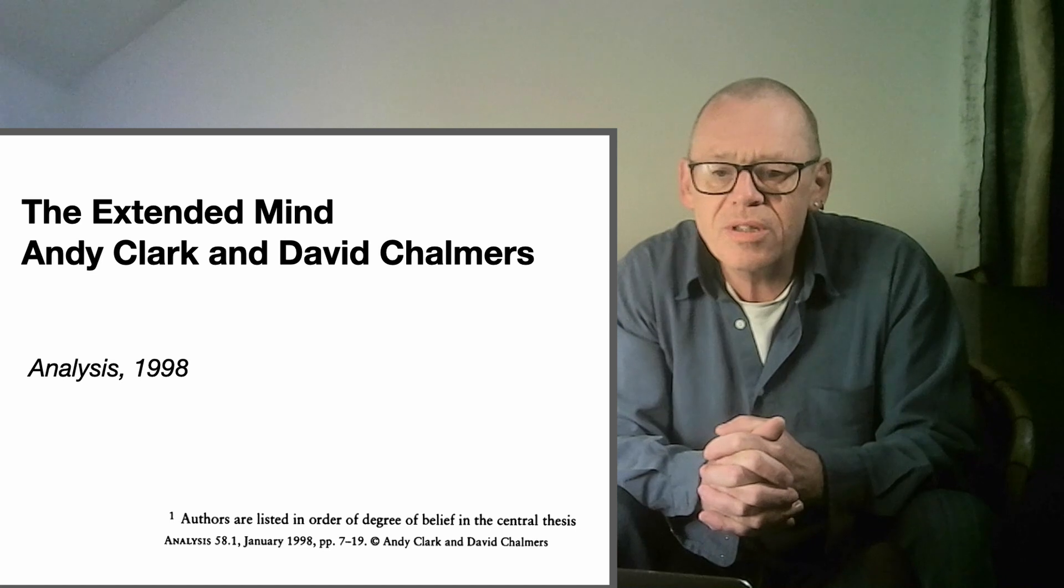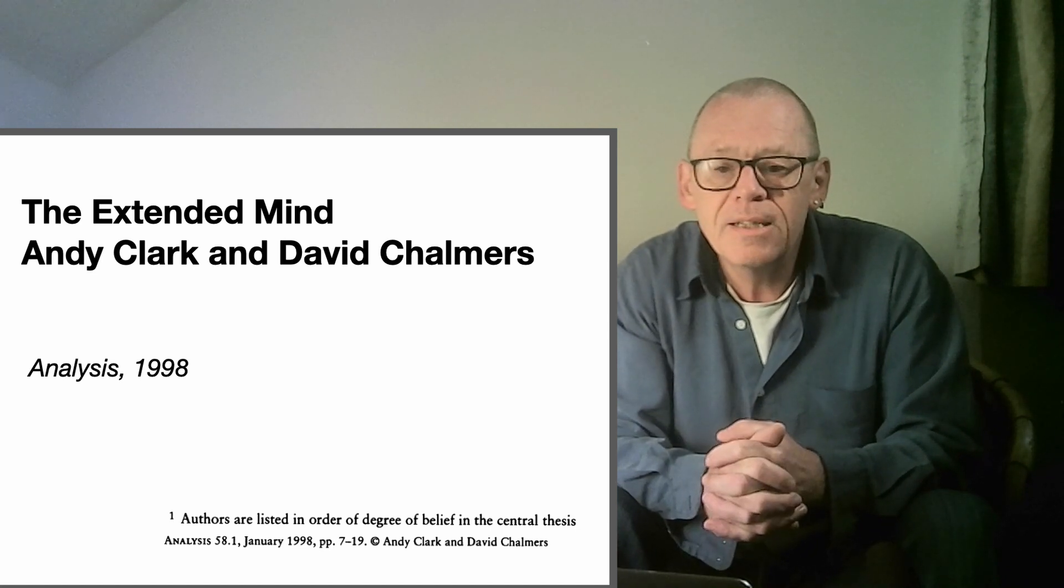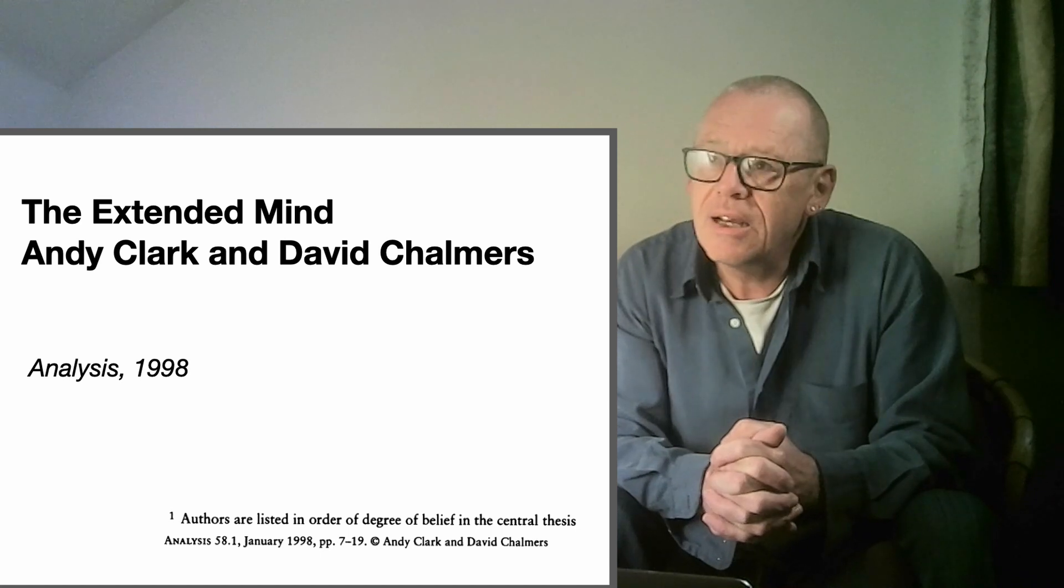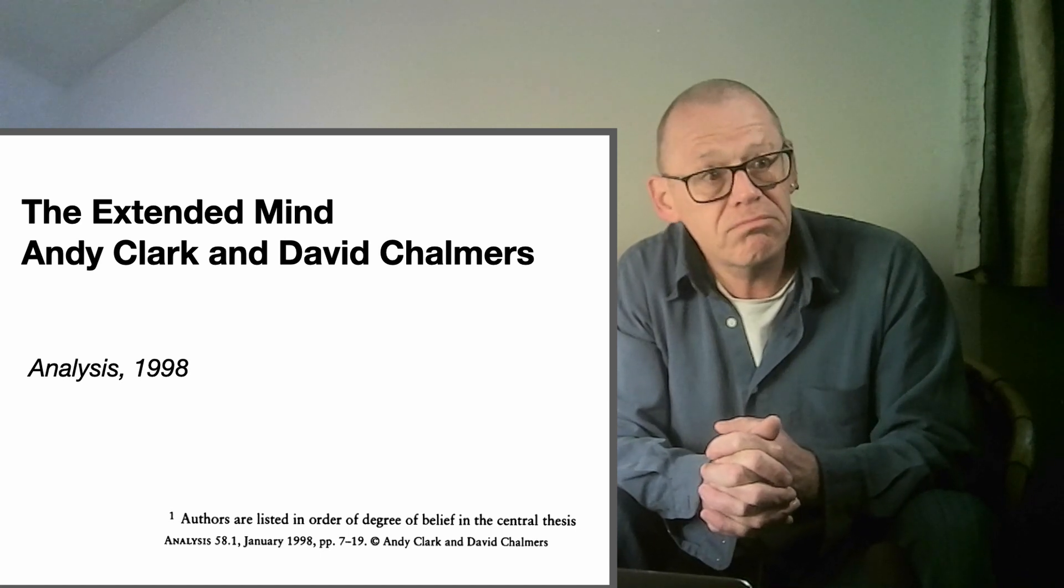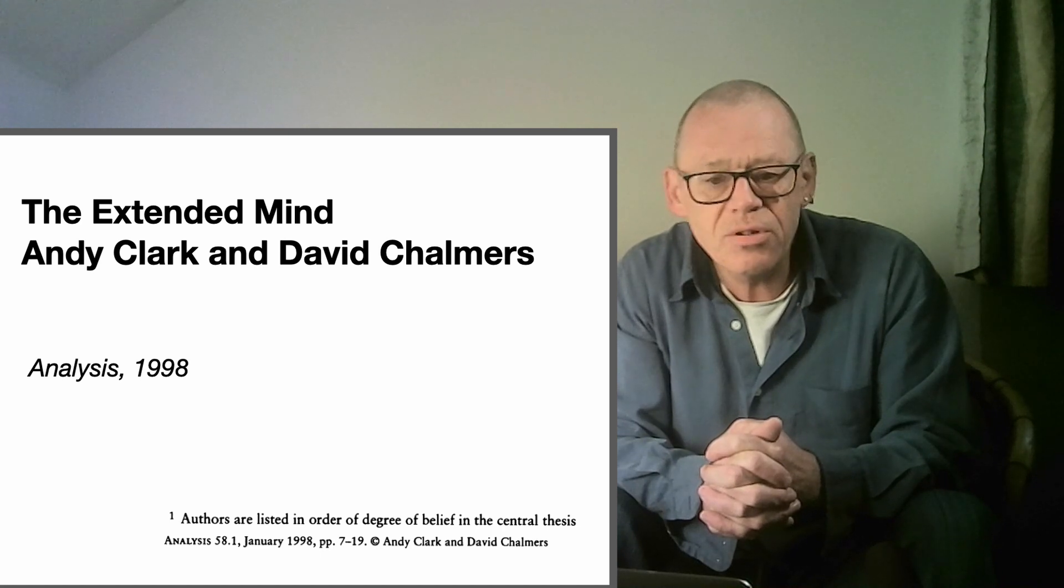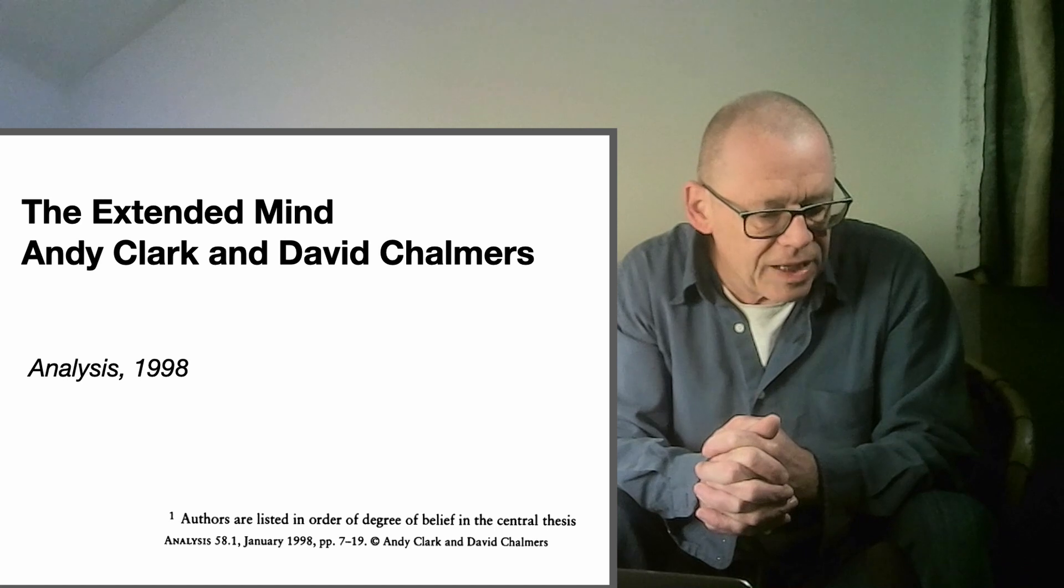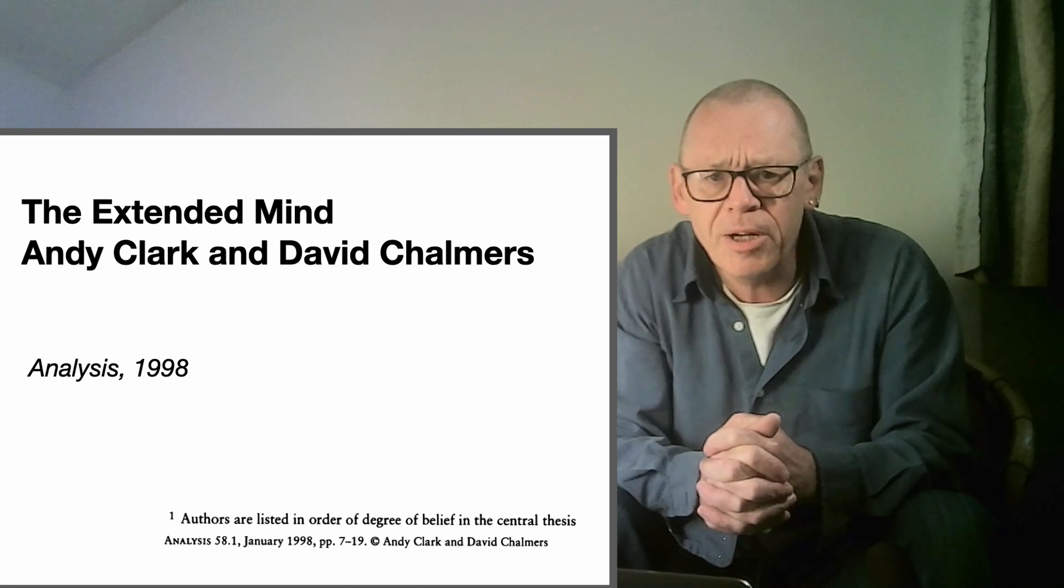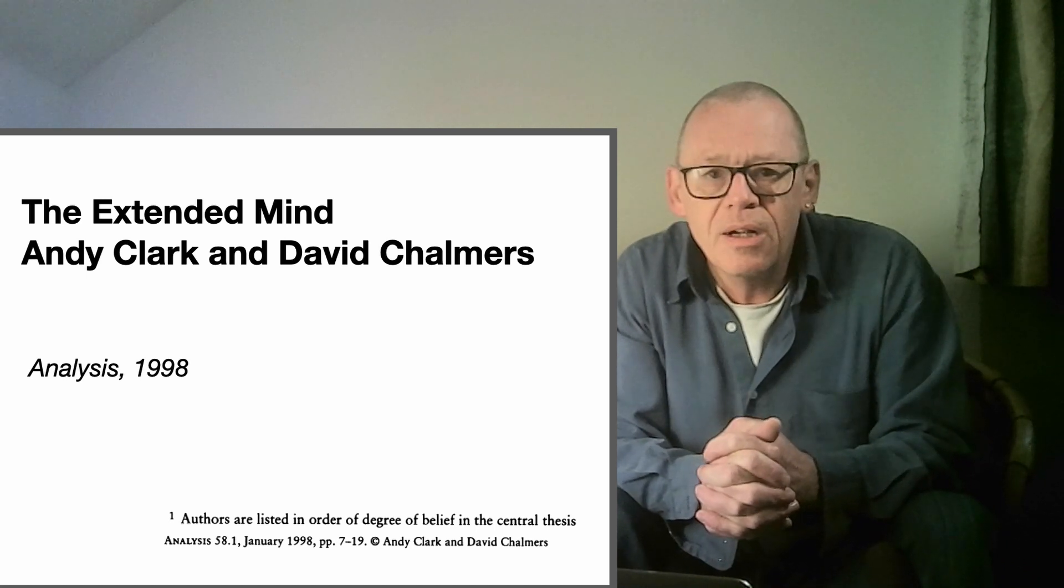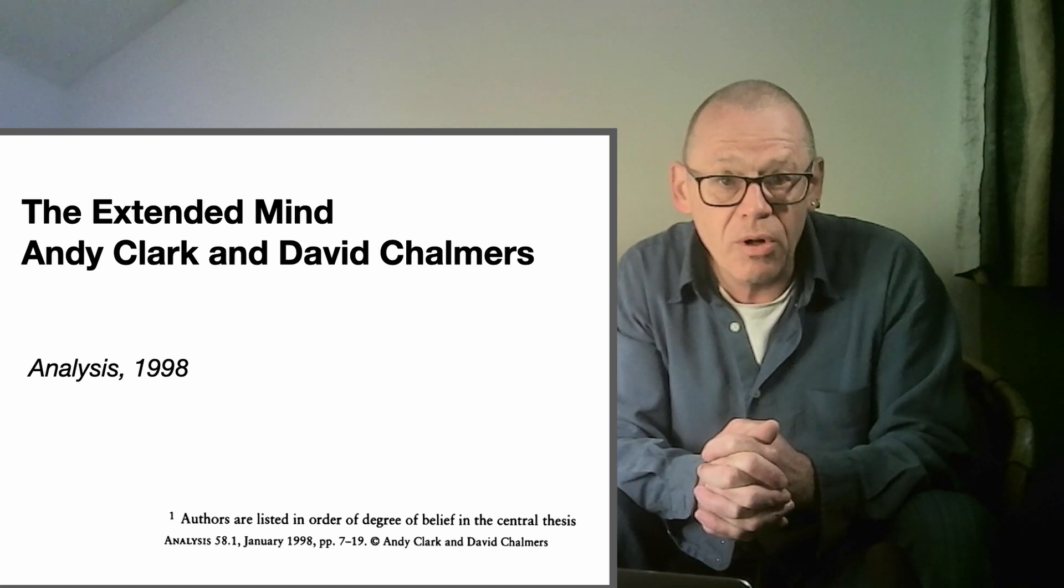Our first stop in this module is a very influential paper called The Extended Mind. It came out in 1998 and caused quite a wave, generated a mini industry as we'll see, and became the most cited philosophy paper of that time. It appeared in a journal called Analysis, and the authors Andy Clark and Dave Chalmers are both extremely famous in their own right.